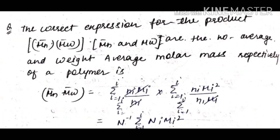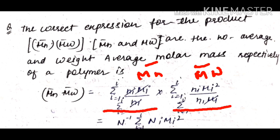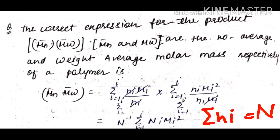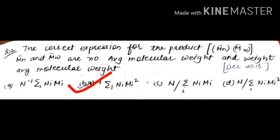Next question: find the correct expression for the product M̄N × M̄W, where M̄N and M̄W are the number average molar mass and weight average molar mass of a polymer. We know M̄N = ΣNiMi / ΣNi and M̄W = ΣNiMi² / ΣNiMi. When we multiply, the ΣNiMi terms cancel, leaving ΣNiMi² / ΣNi. Writing ΣNi as total N, this becomes N⁻¹ΣNiMi². So the answer is B: N⁻¹ΣNiMi².